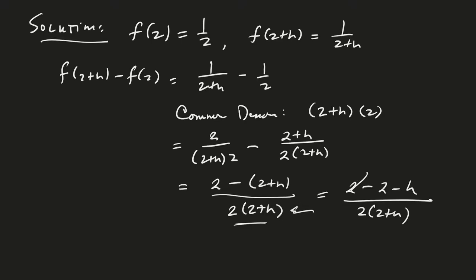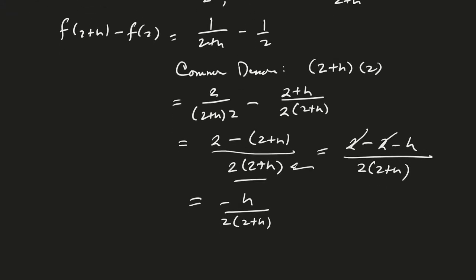And so now the 2's cancel, and we're left. So now we have that the numerator is -h divided by 2 over 2 times (2+h). And now finally, I want to divide both sides by h. So I want to construct (f(2+h) - f(2))/h. So I'll divide this side by h. And we see that the h's cancel. And that is my expression.